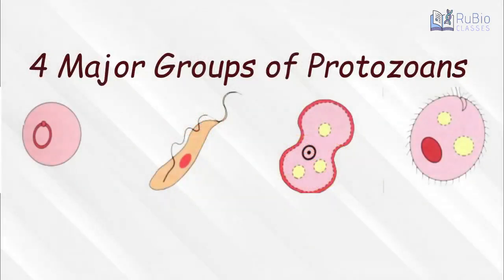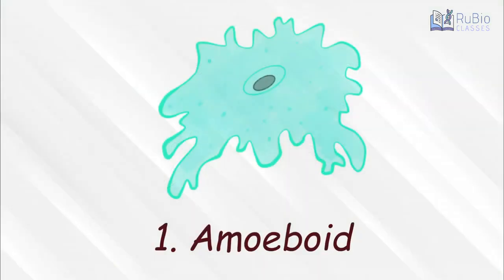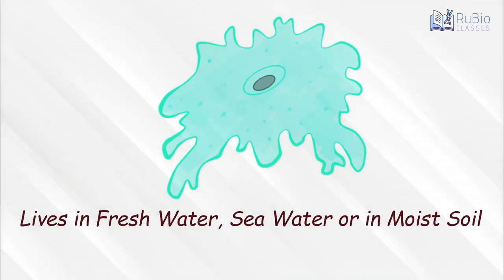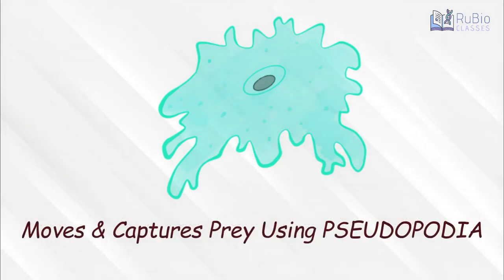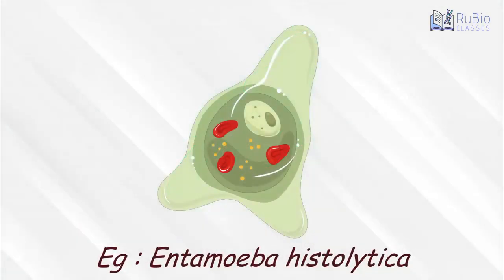There are four major groups of protozoans. Number one: amoeboids, or Sarcodina. They live in freshwater, seawater, or even in moist soil. They move and capture their prey by putting out pseudopodia, or false feet. An example is Entamoeba.